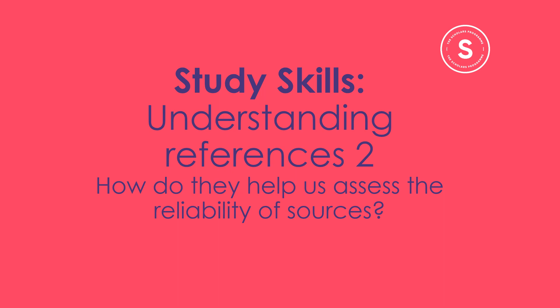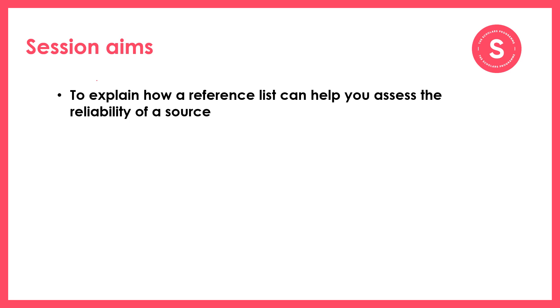References are important for every subject so the session will be useful for everyone. It's aimed at 13 to 16 year olds but may be useful for older students too. There are two aims for this session: the first is to be able to explain how a reference list can help you assess the reliability of a source, and the second is to be able to recognise reliable references.